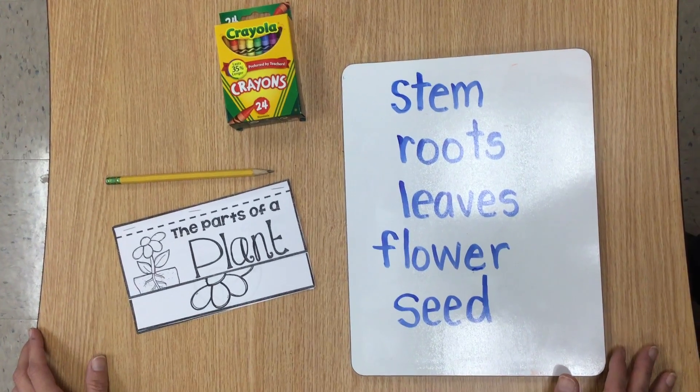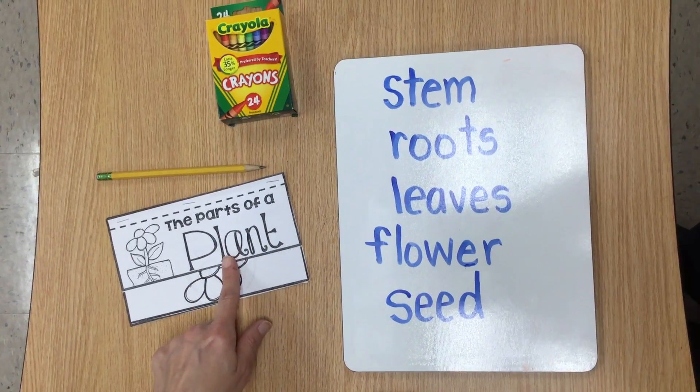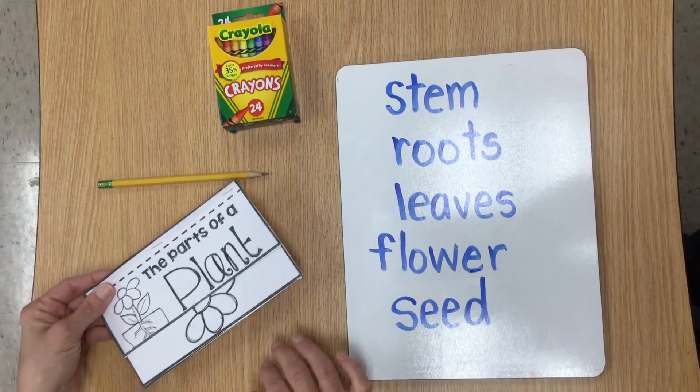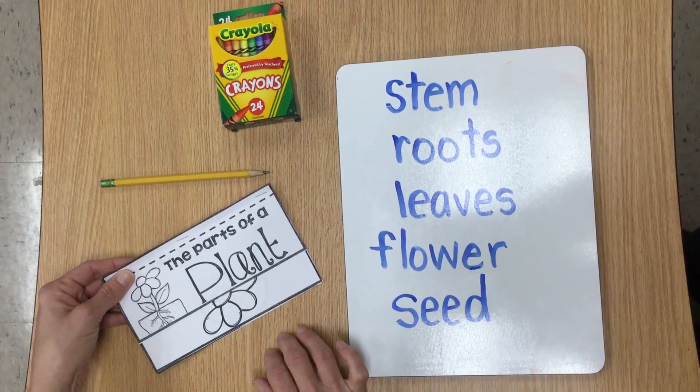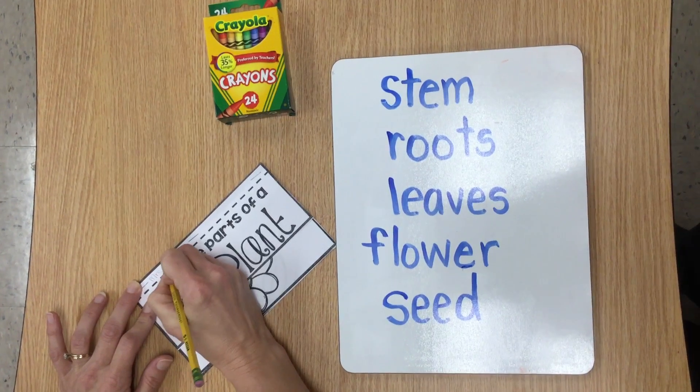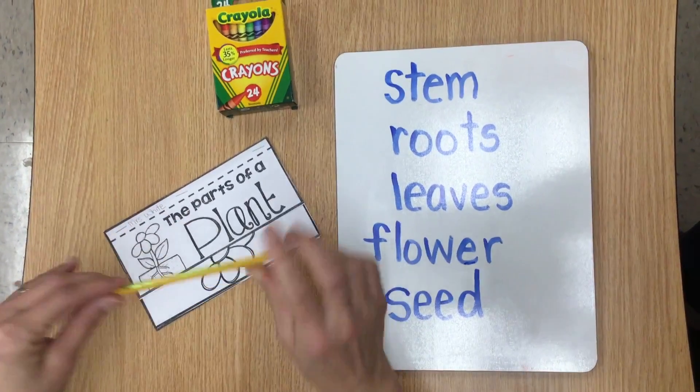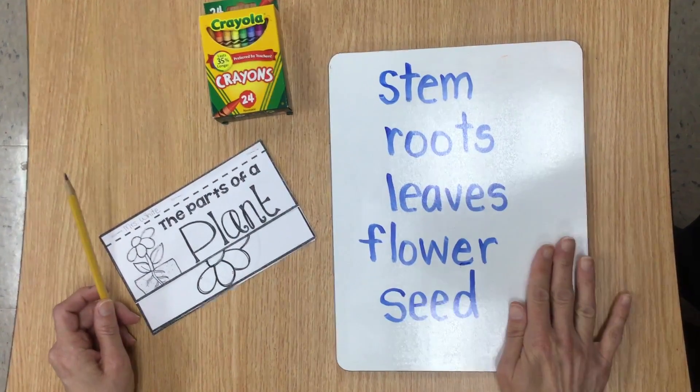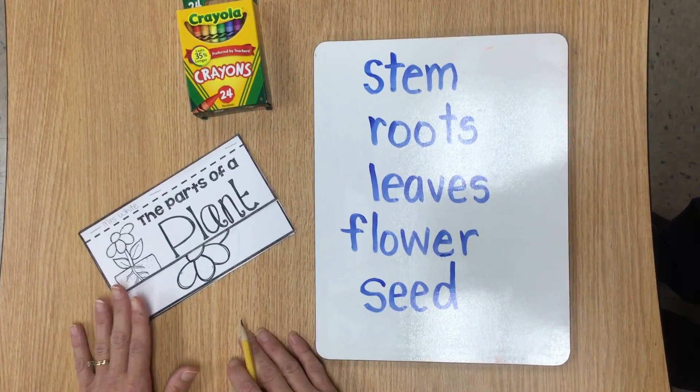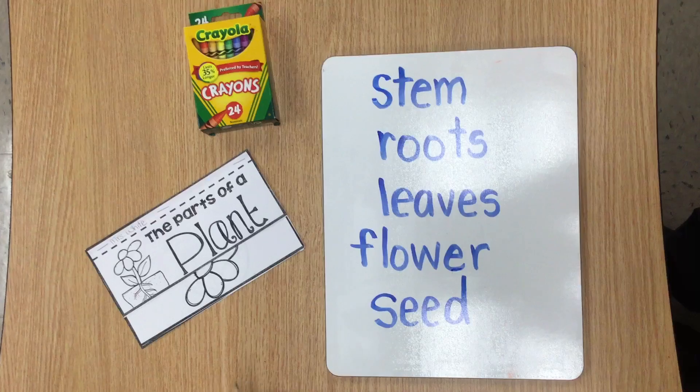Hi boys and girls, for this activity you're going to be completing the parts of a plant booklet. You're going to need your booklet with your number on it. Make sure you write your name on there as soon as you get it. And you're going to need a pencil, crayons, and you'll want to be able to look at the vocabulary words that you're going to need to fill in the blanks. So go ahead and go get all of your supplies and pause the video while you do that.